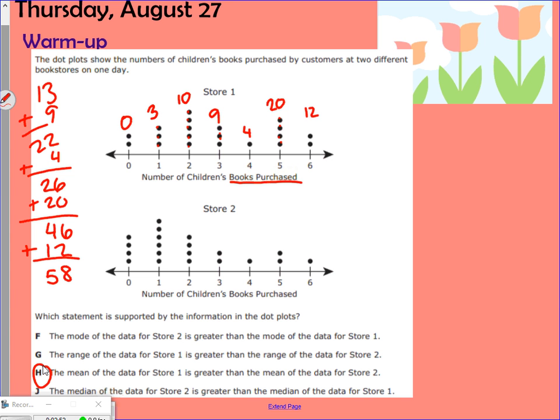Continuing to find the mean, we're going to add all those numbers up. So three plus ten is thirteen. Thirteen plus nine is going to give me twenty-two. Plus four is going to give me twenty-six. Plus twenty is forty-six. Plus twelve is going to give me fifty-eight. Add and divide. I need to divide by the number of numbers.